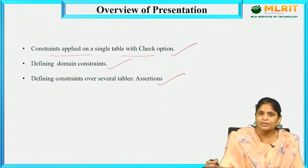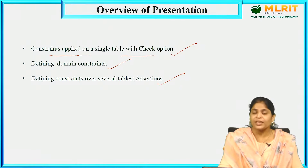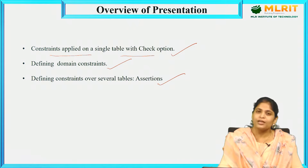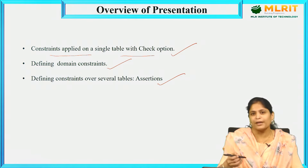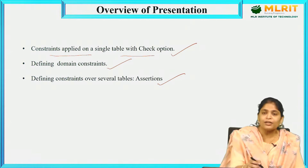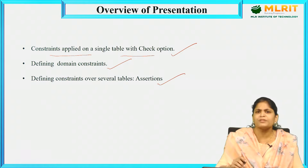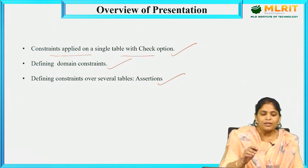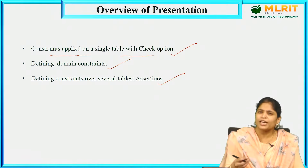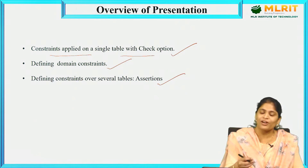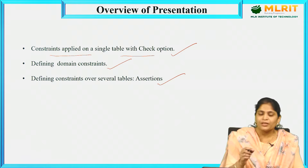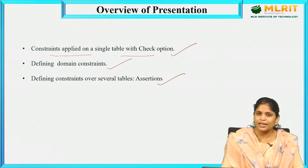Before discussing these three, we need to know what a constraint is. In the context of DBMS, constraints are nothing but a set of rules — rules maintained to keep the database in a consistent manner. We define three types of constraints: rules applied on a single table, rules applied on a group of tables called assertions, and domain constraints defining rules for a particular column.